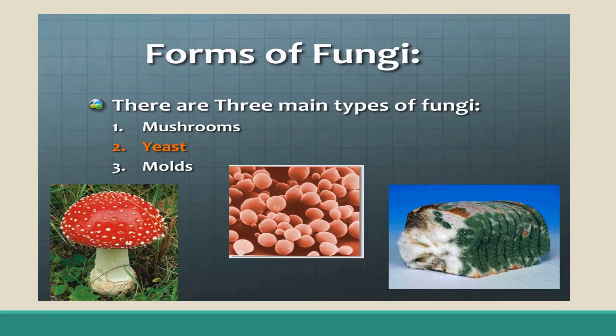Next is fungi. Fungi are either unicellular or multicellular, but even when multicellular they are small creatures. A unicellular fungi example is yeast. Multicellular fungi include mushroom, mold, etc. In the case of mold, there are thin fiber-like structures called hyphae, which go inside the substratum — the food material on which the mold is growing.